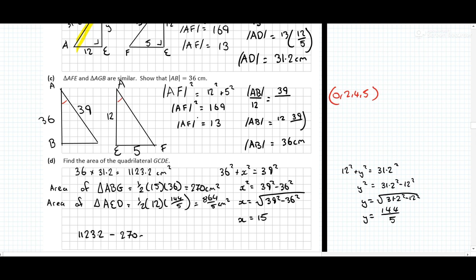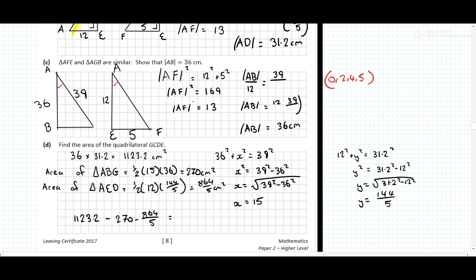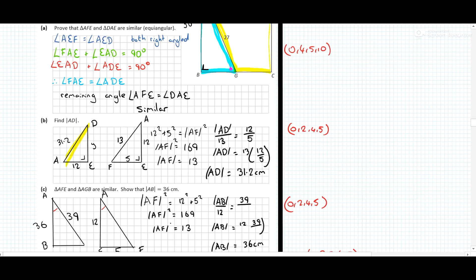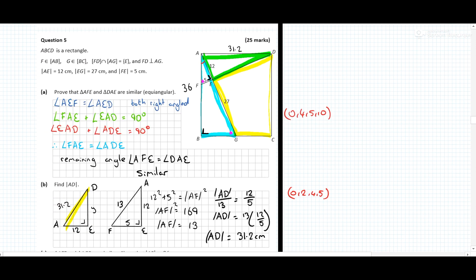Subtract them from the rectangle area. The final answer is 3402 over 5, or 680.4 centimeters squared. Really nice question — five marks, 0, 2, 4, 5 in general. That is one of the nicer questions for the topic and I'd be very happy with this.